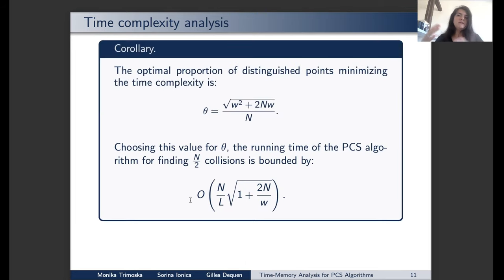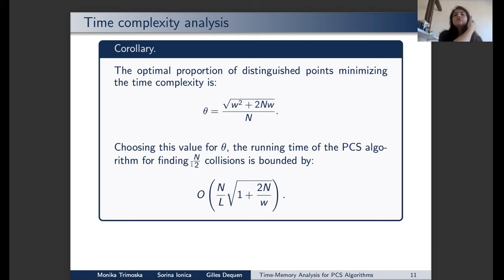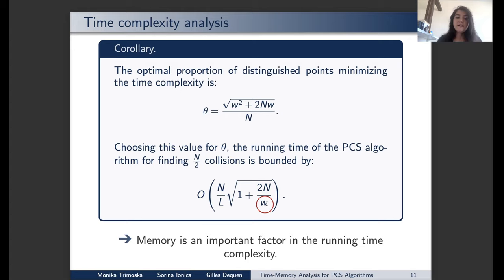A corollary of this theorem gives the optimal proportion of distinguished points theta that minimizes time complexity. We found the optimal value of theta. Another derivation shows the running time of the PCS algorithm for finding N over 2 collisions — the number needed for a classical meet-in-the-middle attack. The formula shows w in the denominator, meaning the more points we can store, the lower the running time. This confirms that memory is an important factor in the running time complexity, and motivates our further work on the implementation side.